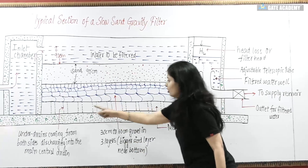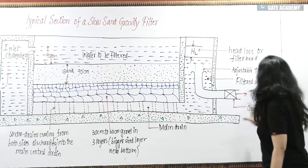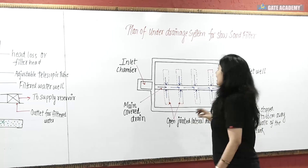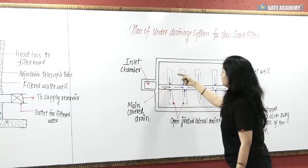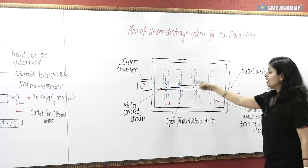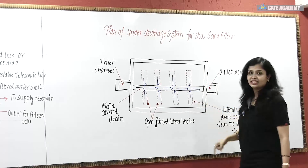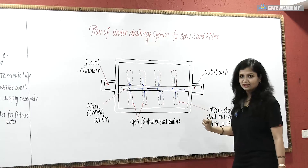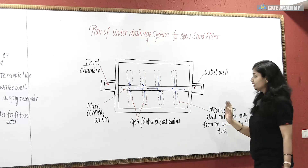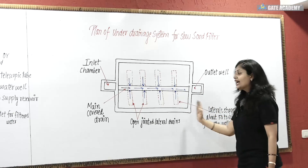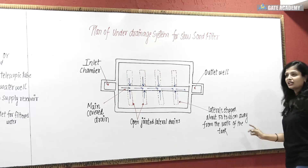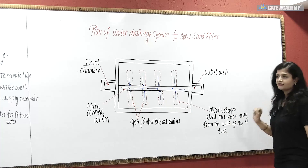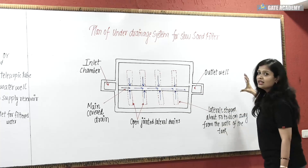Now I have drawn the under drains and the main central drain. Focus on this plan view so you will have a clear view. Here you can see from the inlet chamber through the gravel. All of these small lines are your lateral drains. An inclination is provided so that these lateral drains can supply the water to the main central drain. The main central drain chamber is 50 to 60 cm, and the tank walls are further from it. After that, we have an outlet well, from which water goes to the filtered water well and then to the reservoir.